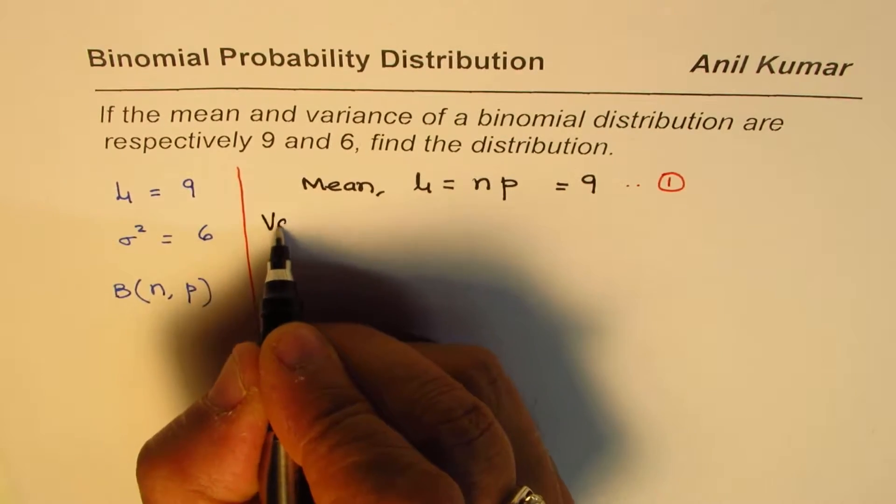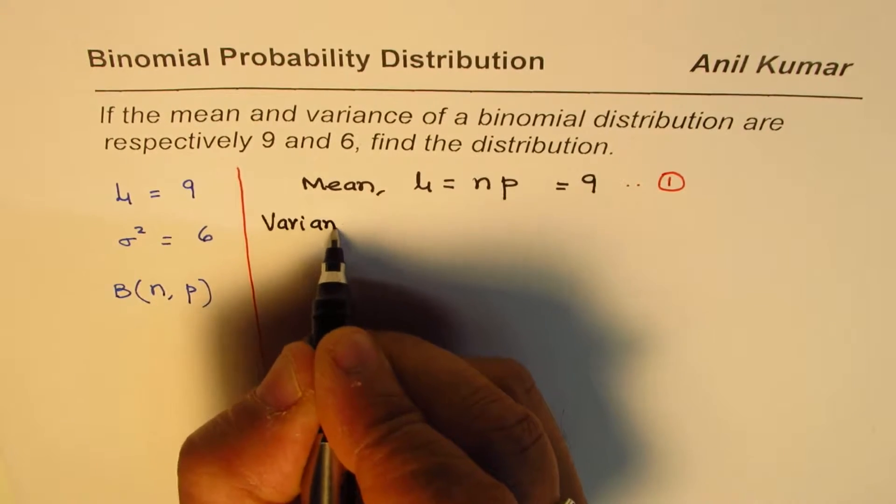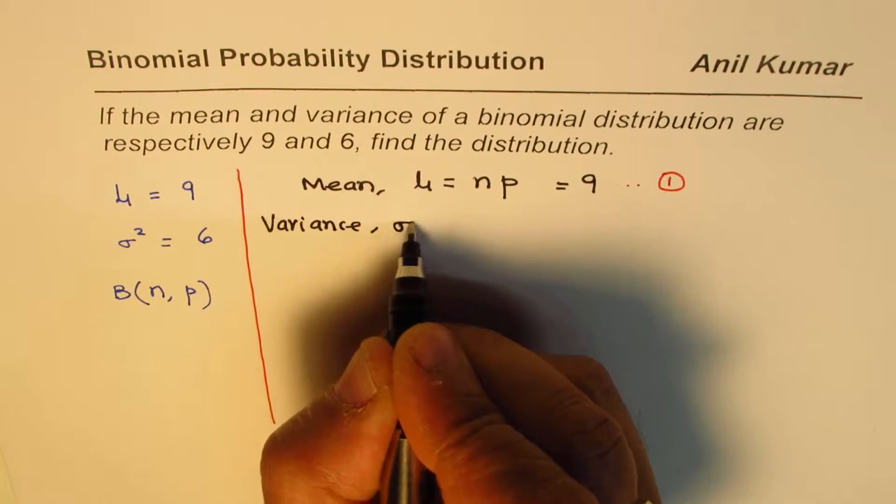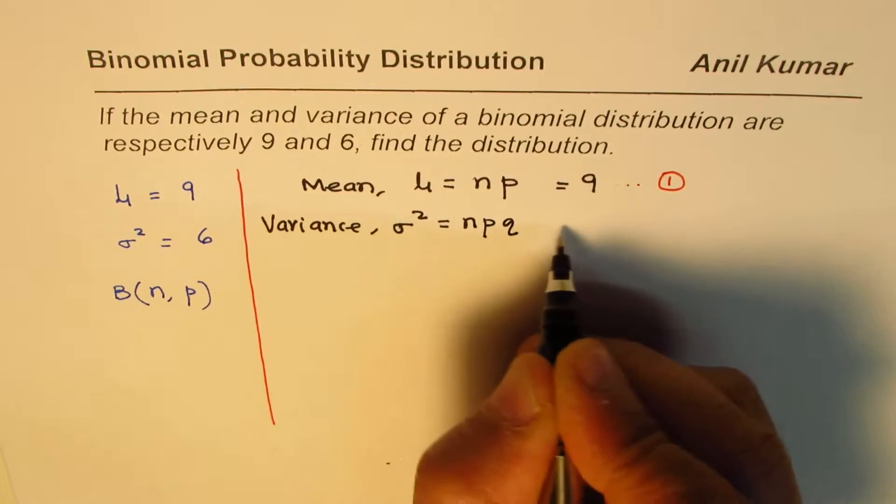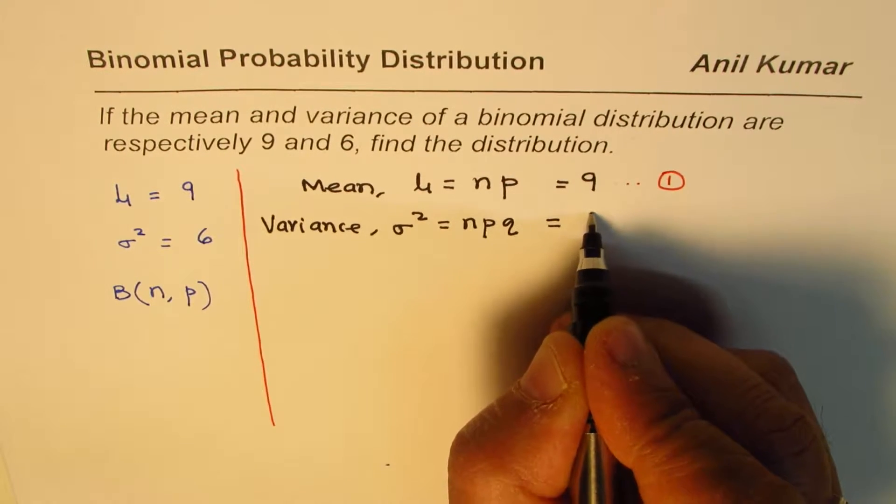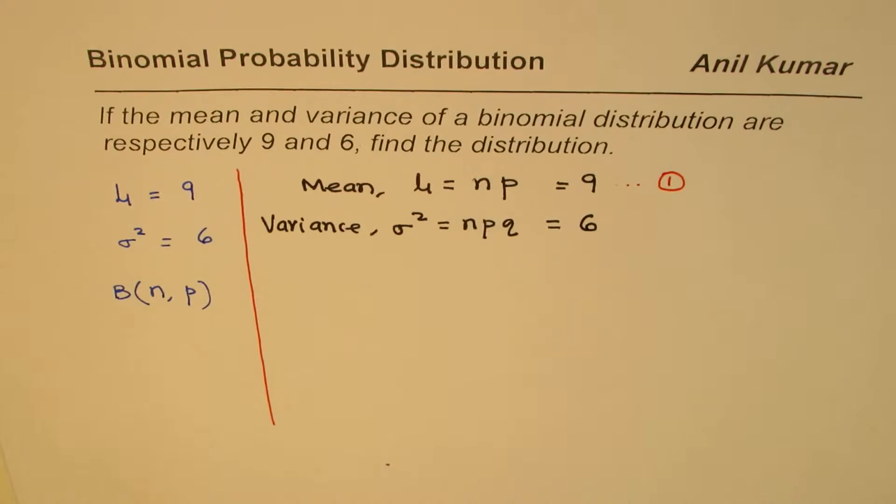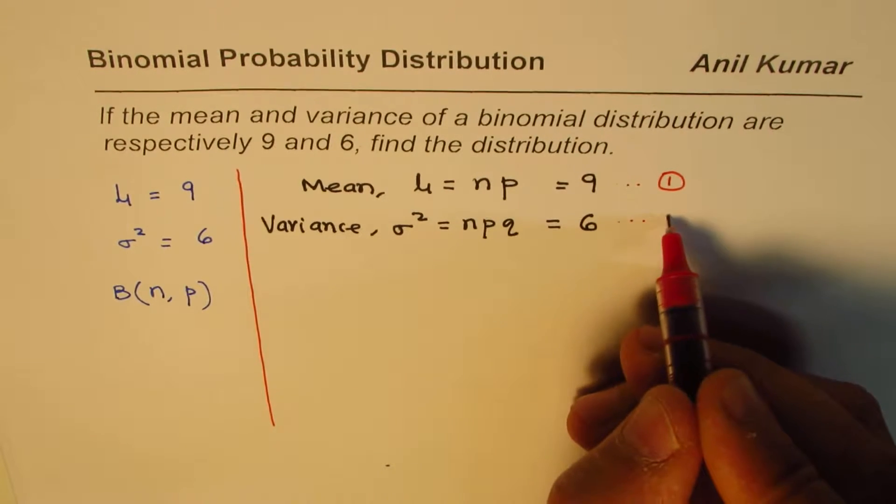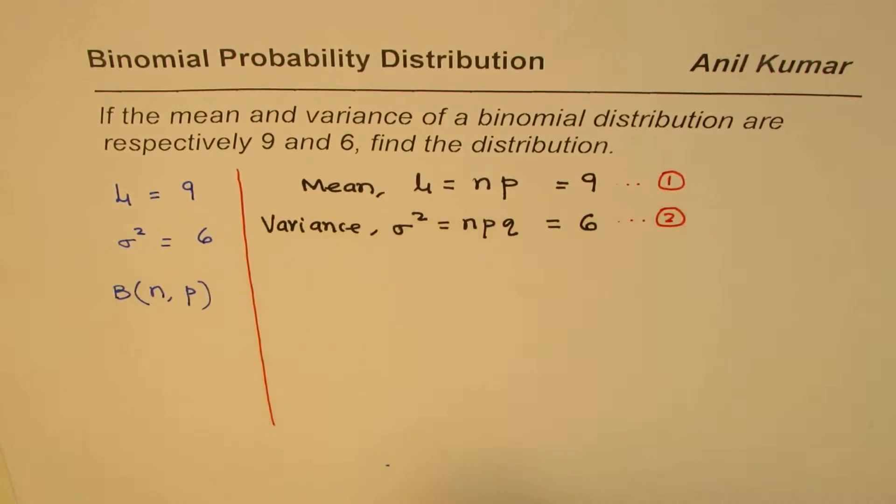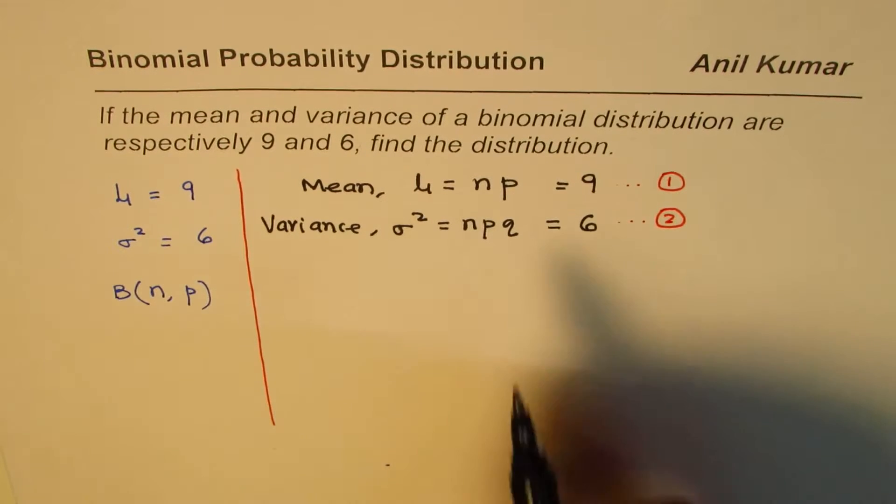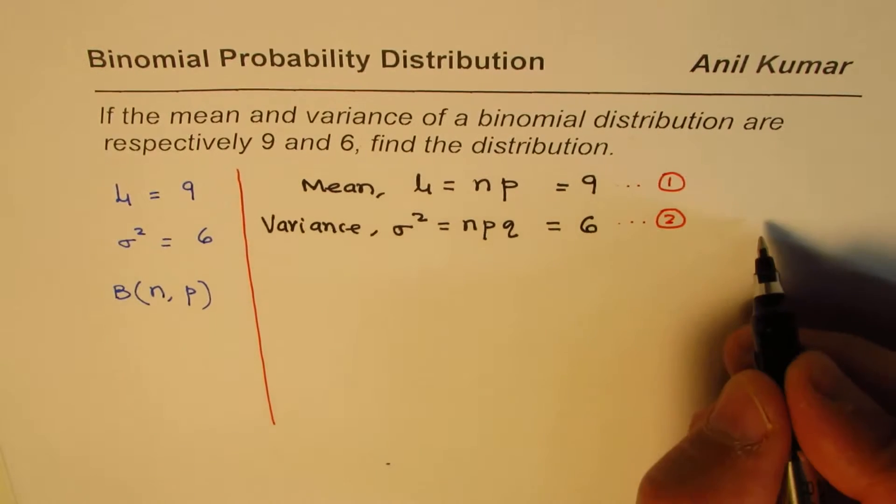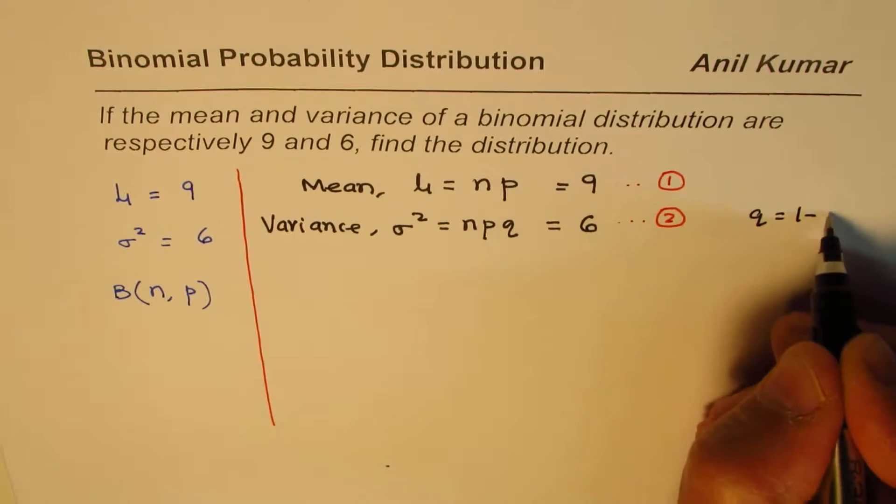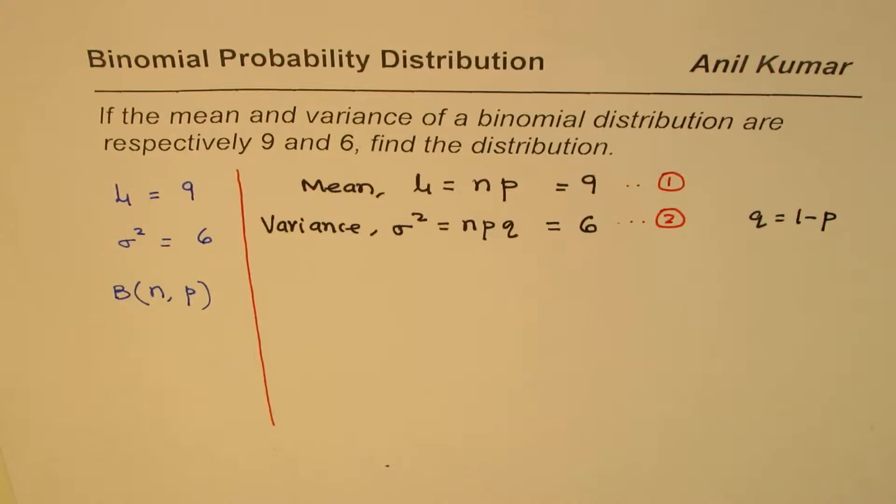Variance is the square of σ, which is standard deviation, which equals npq. That is given to us as 6, so this is the second equation. We have two unknowns because q equals 1 minus p, so we have basically two unknowns.